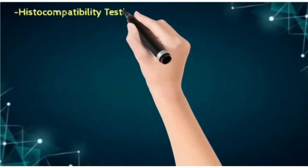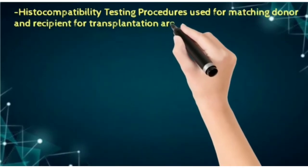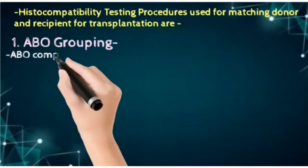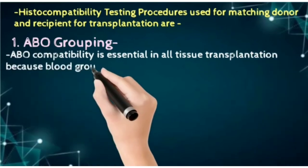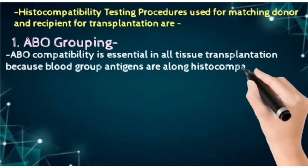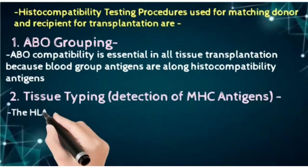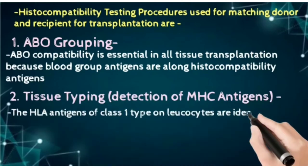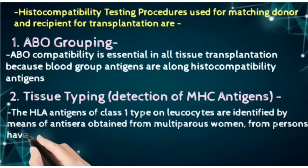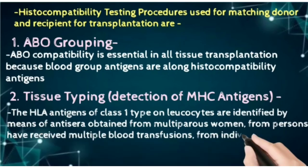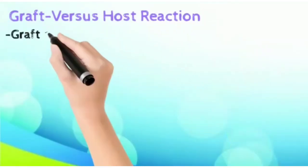Histocompatibility testing procedures are used for matching the donor and recipient during transplantation. First is ABO grouping, which is essential in all tissue transplantations because blood grouping antigens are among the histocompatibility antigens. Then tissue typing is done to detect MHC antigens. HLA antigens of class 1 type on leukocytes are identified by means of antisera obtained from multiparous women or from persons who have received multiple blood transfusions or who have been repeatedly skin grafted.